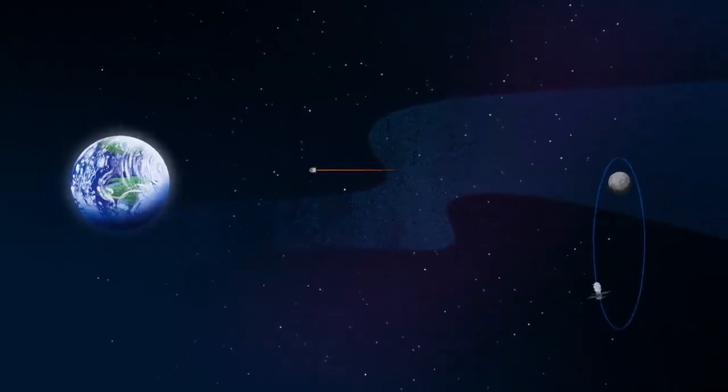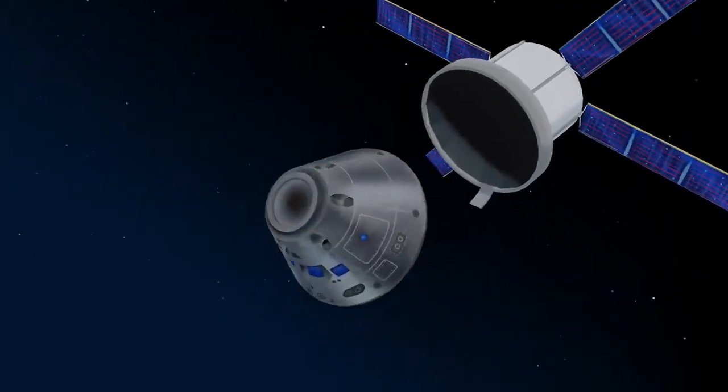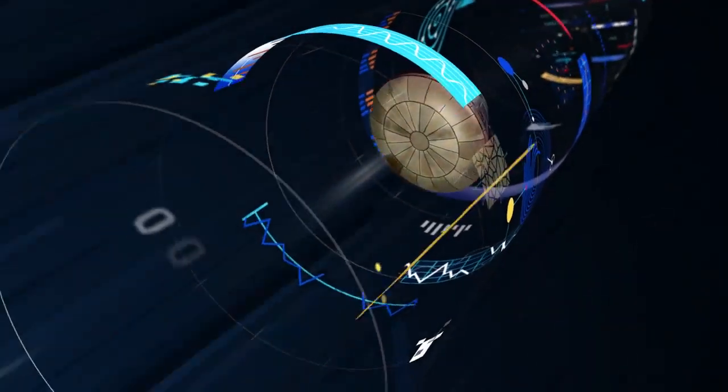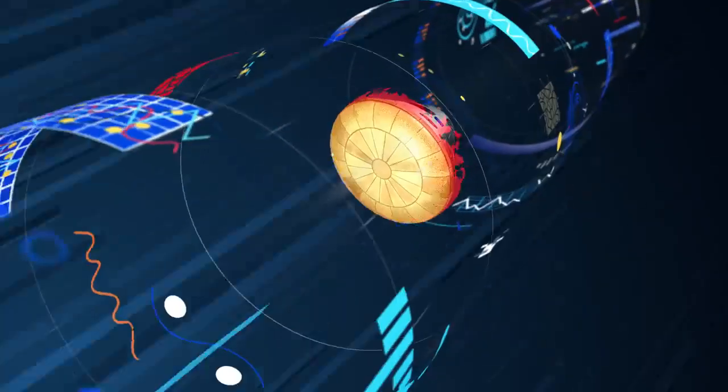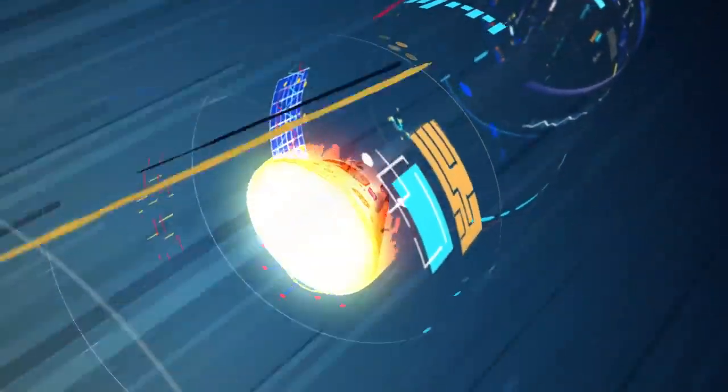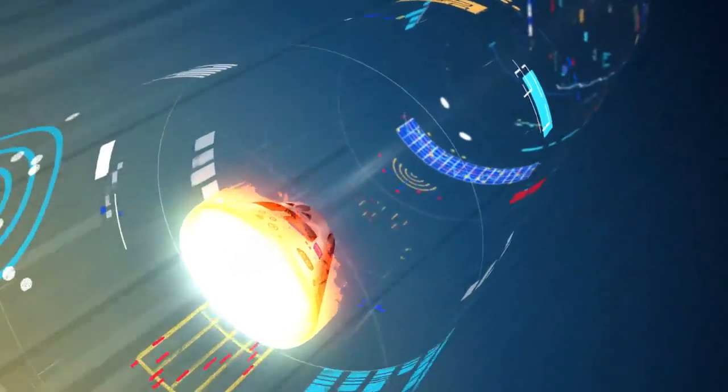As they near the end of this journey, the service module is released, and the crew module is oriented heat shield first. Entering Earth's atmosphere at 25,000 miles per hour, the friction of air slows Orion considerably, while also subjecting it to temperatures of 5,000 degrees.